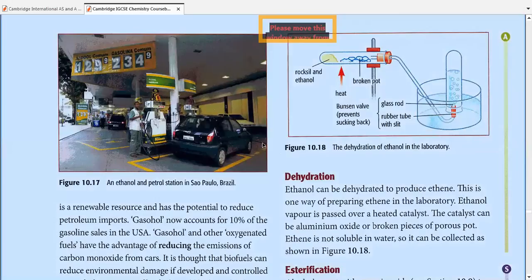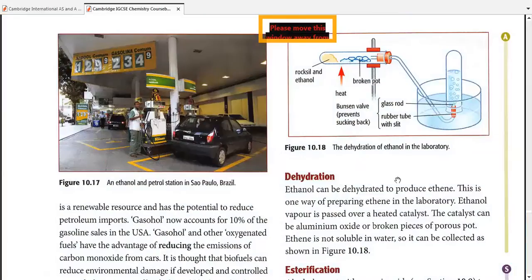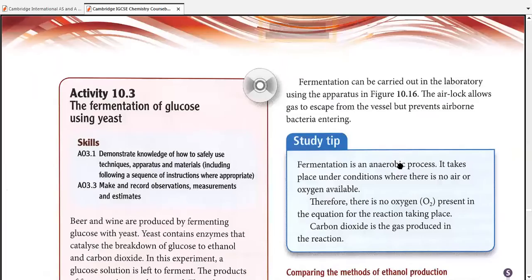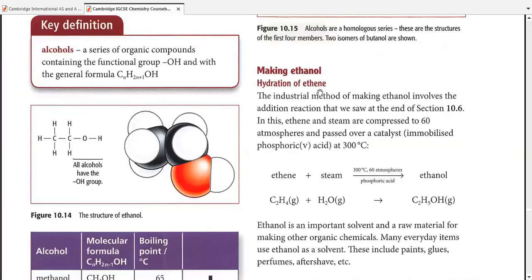Our topic for today is dehydration. Dehydration is a process which is opposite to how we make ethanol. We manufacture ethanol on industrial basis using hydration of ethene. Let me clarify the names first. Hydration of ethene means to add water. We add water to ethene in the form of steam and we'll get ethanol.